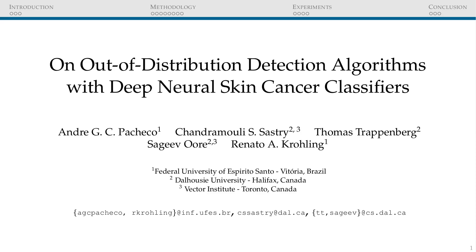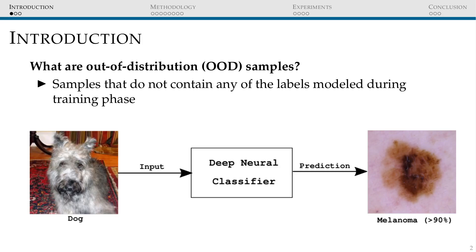In this work, we discuss out-of-distribution detection algorithms with neural skin cancer classifiers. Out-of-distribution samples are examples that are not present in the distribution of the data set used to train the model. For example, say we have a deep neural classifier trained over skin cancer images. If we present it with an image of a dog, it may predict this image as being melanoma, the deadliest case of skin cancer, with high confidence.